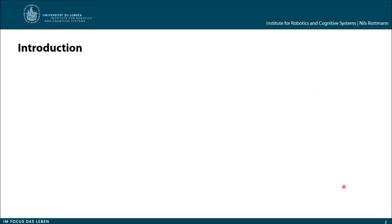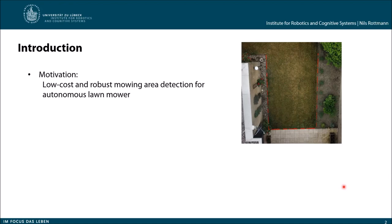As our title already suggests, we want to detect the mowing area for autonomous lawnmowers by designing a really low-cost sensor, which makes autonomous lawnmowers cheap and affordable for everyone.